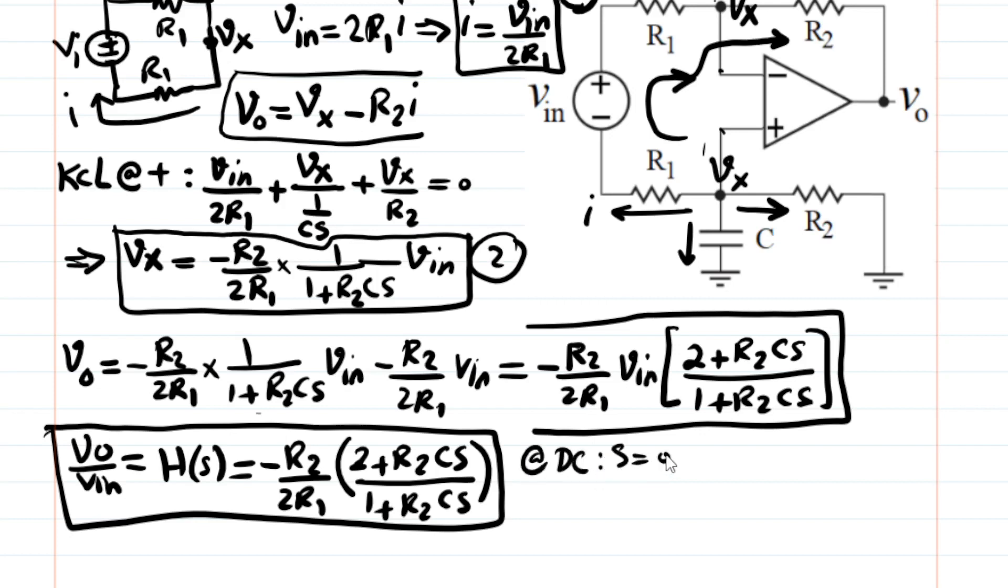S is zero. Therefore, gain is simply negative R2 over R1. At high enough frequency, much larger than zero. Then what you get is R2 Cs dominates numerator. R2 Cs dominates denominator. So effectively, this whole thing becomes 1. And then the gain at high enough frequency is just negative R2 over 2R1. Exactly what we expected.